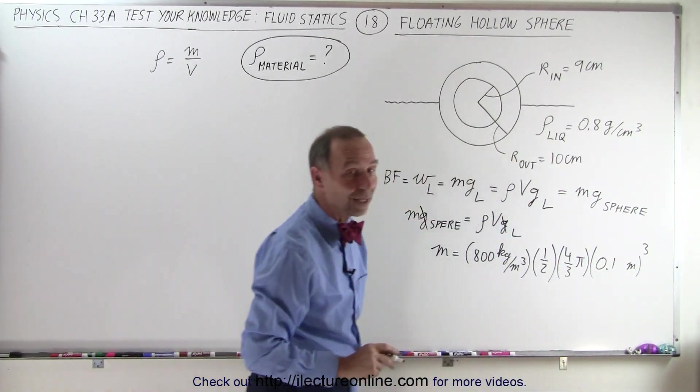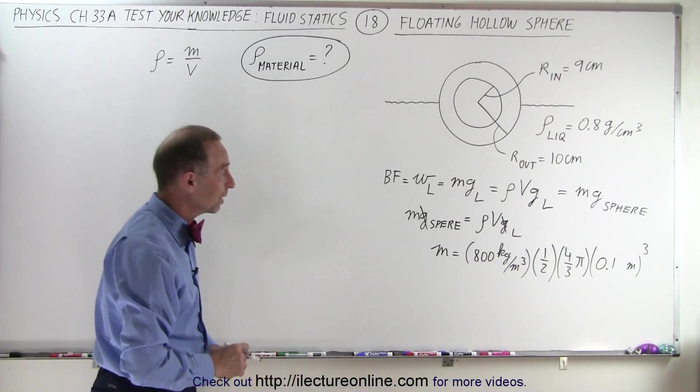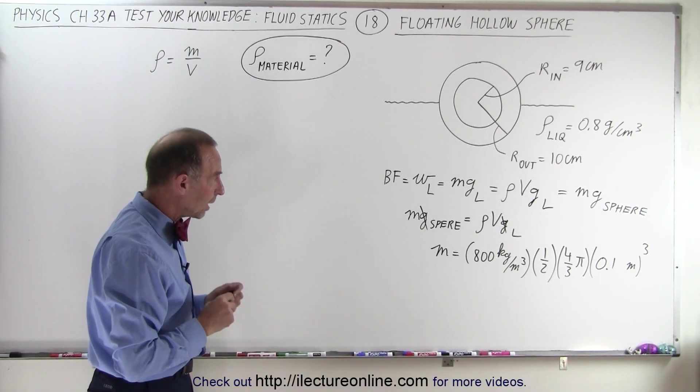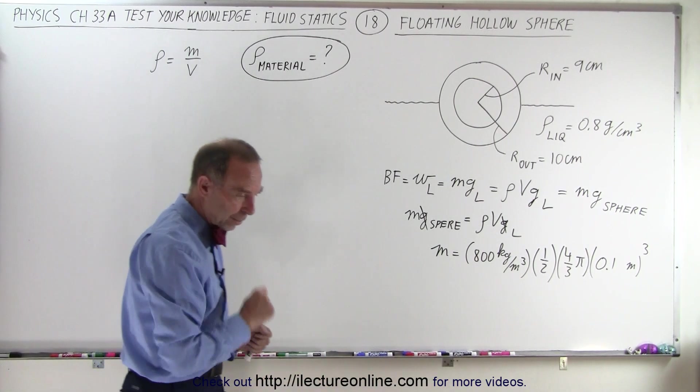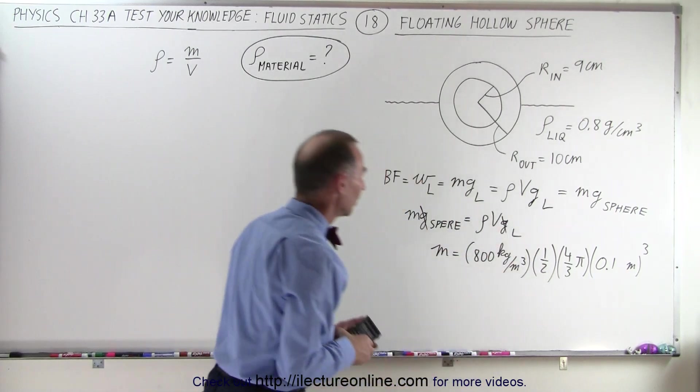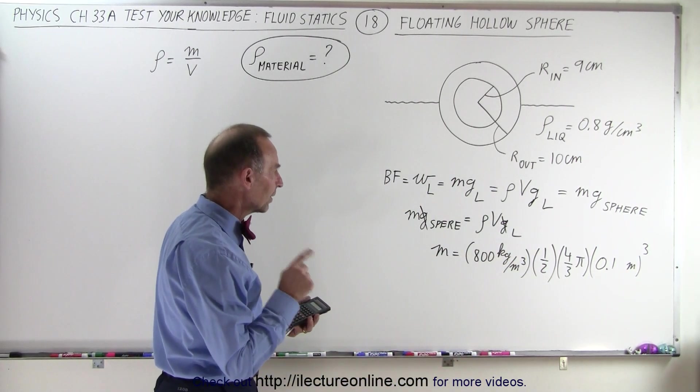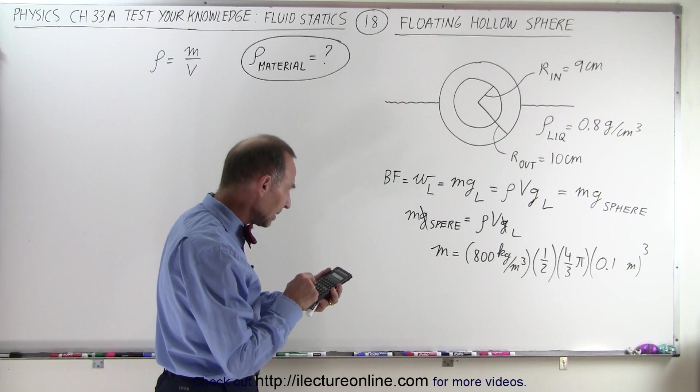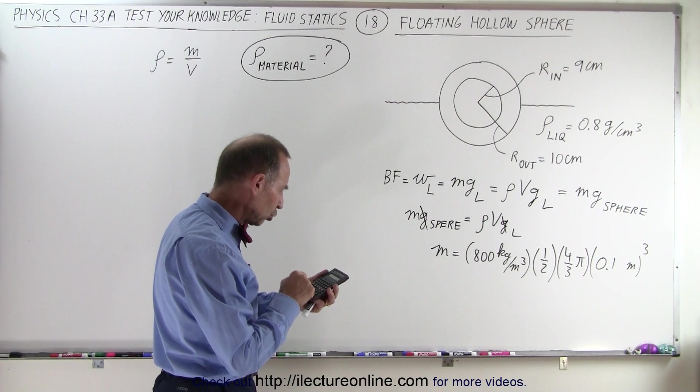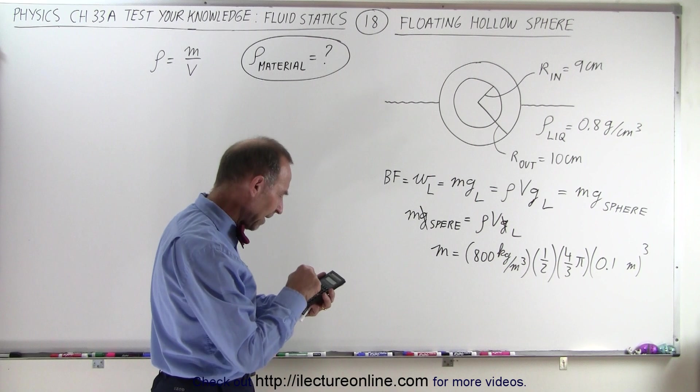How about 0.1 meters? 10 centimeters is 0.1 meter, and we cube that. We're now ready to calculate the mass. So we have 800 divided by 1,000, that would be 0.8, times 2, divided by 3.